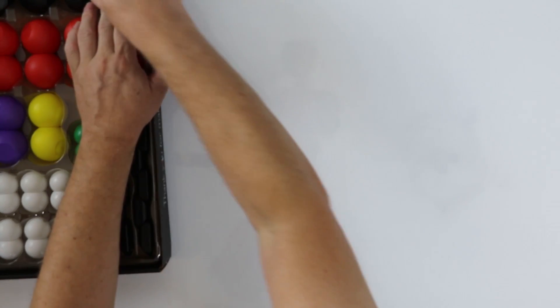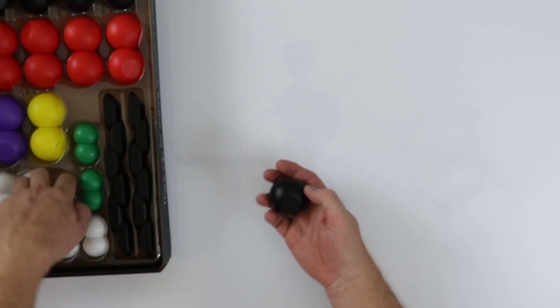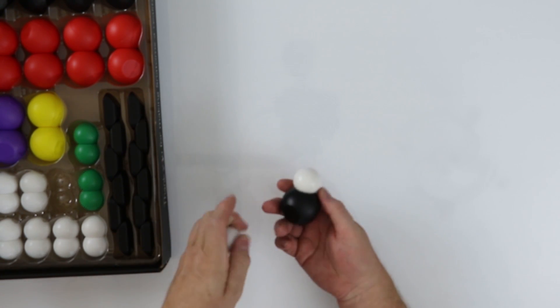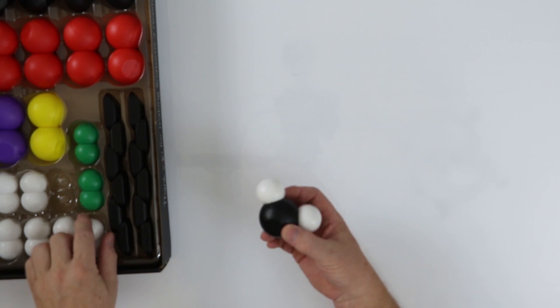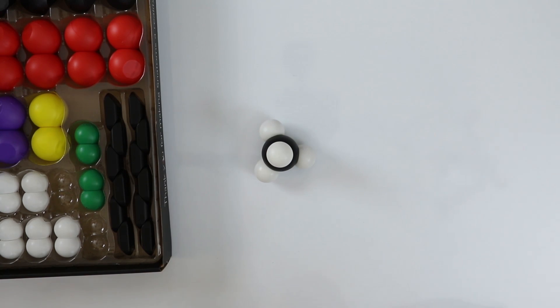Making the molecules from these atoms is a snap. Here is a model of methane carbon and one two three four hydrogens.